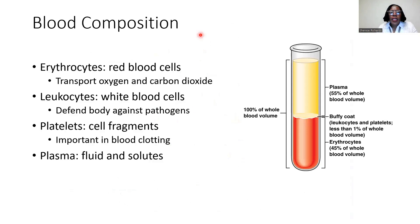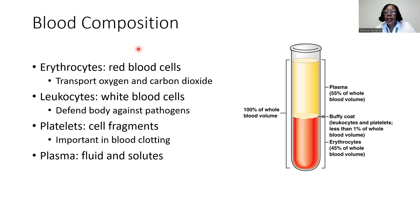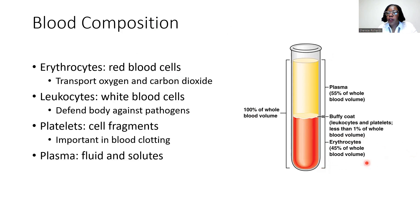Next, we'll look at the blood composition. Blood is going to be the final component of the cardiovascular system, and blood is made of a lot of smaller components that actually make up what we know as blood. First of all, we've got the erythrocytes. The erythrocytes are the red blood cells — these are the cells that are carrying the oxygen and carbon dioxide, actually transporting these gases in the blood. These make up about 45% of our total blood volume.